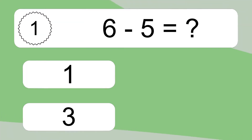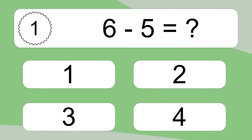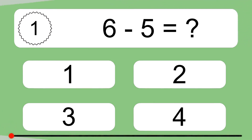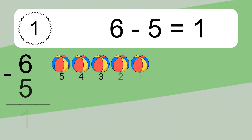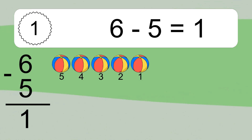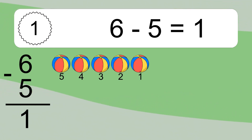6 minus 5 equals what? 6 minus 5 equals 1. Let's count it: 5, 4, 3, 2, 1.